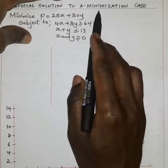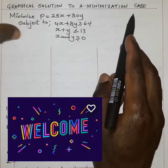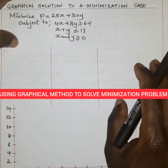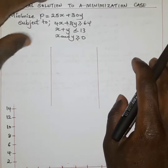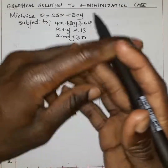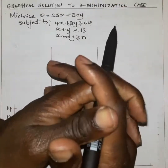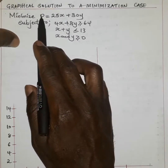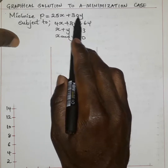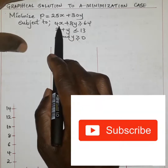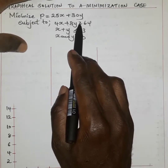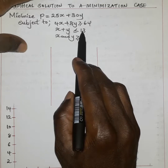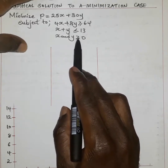Today's problem involves a minimization problem as used in linear programming using the graphical method of solution. We are supposed to determine the optimal solution, which normally involves a maximization or minimization problem. In this case it is a minimization problem whereby we are given to minimize P equal to 25X plus 30Y, subject to 4X plus 8Y greater than or equal to 64, X plus Y less than or equal to 13, and X and Y greater than or equal to 0.